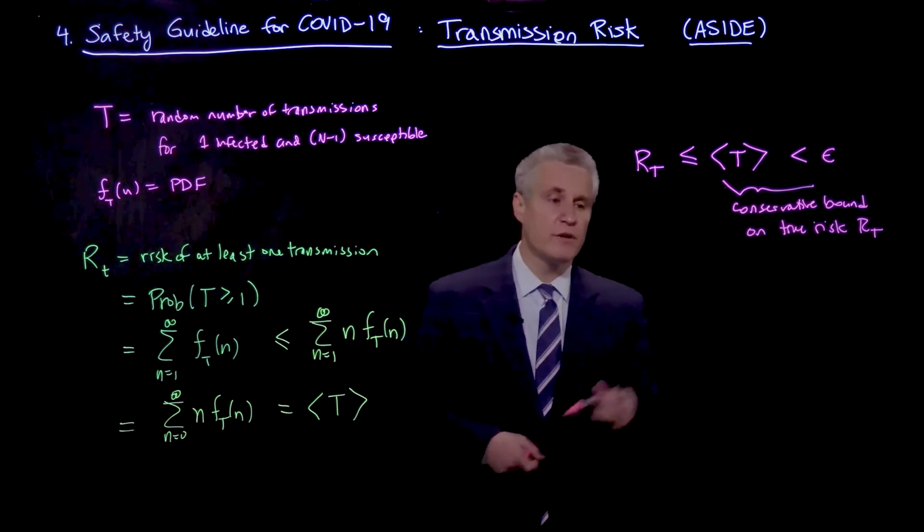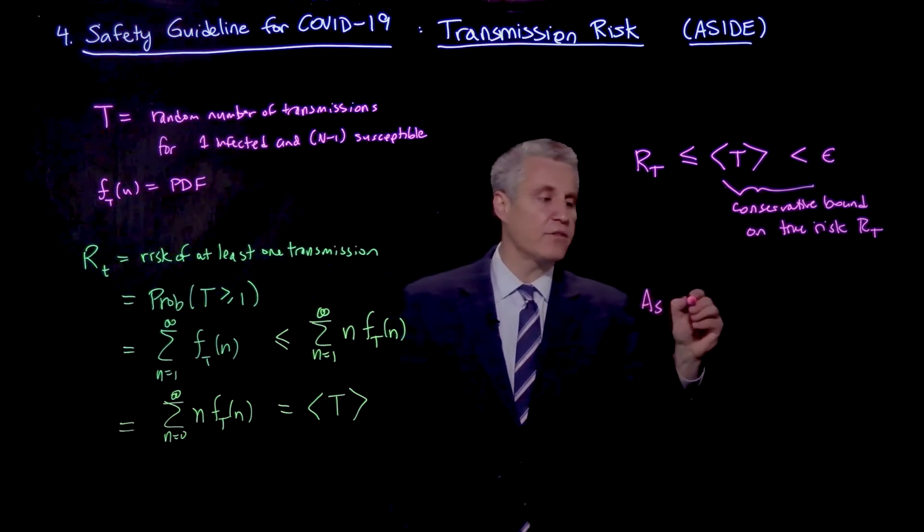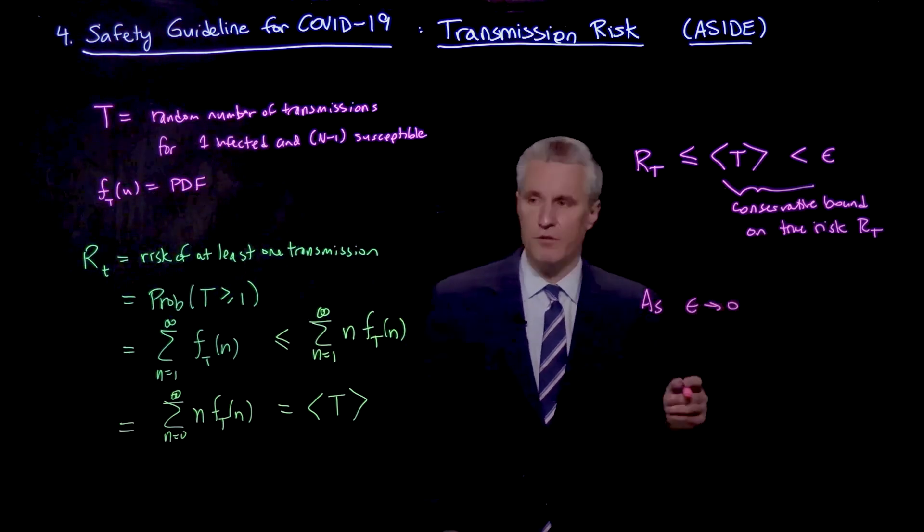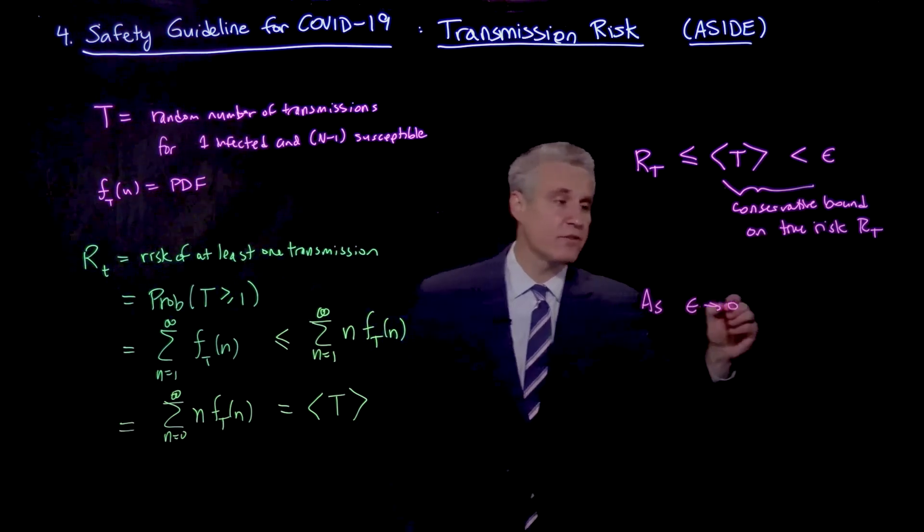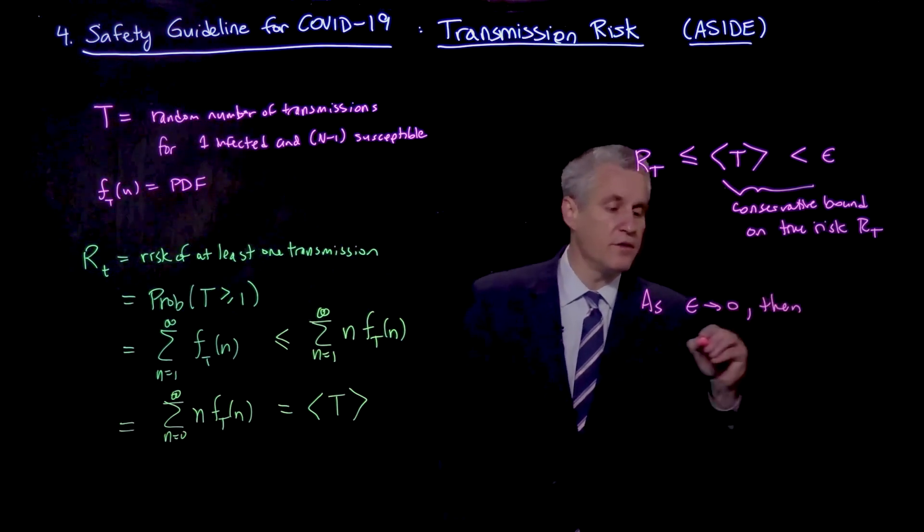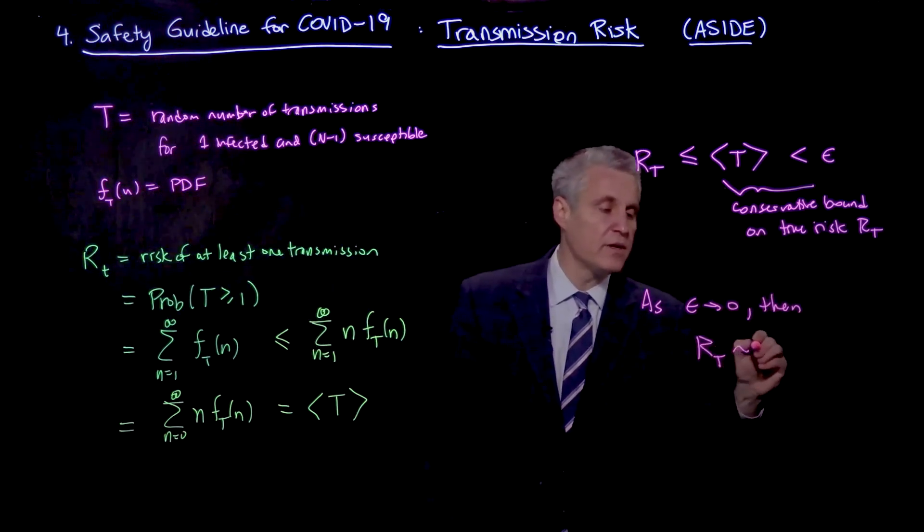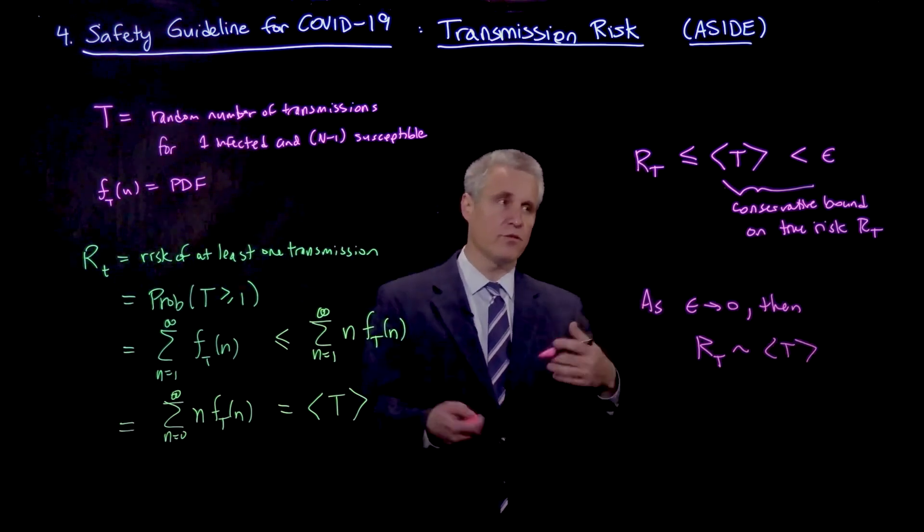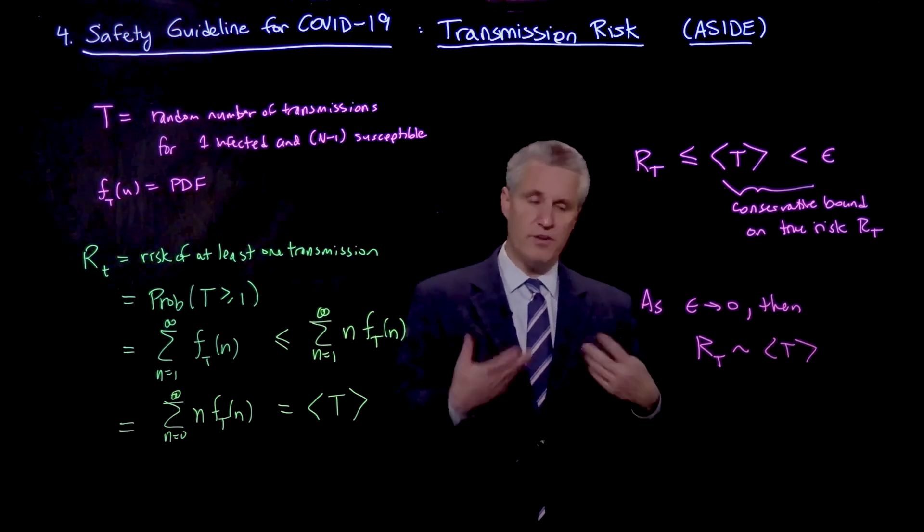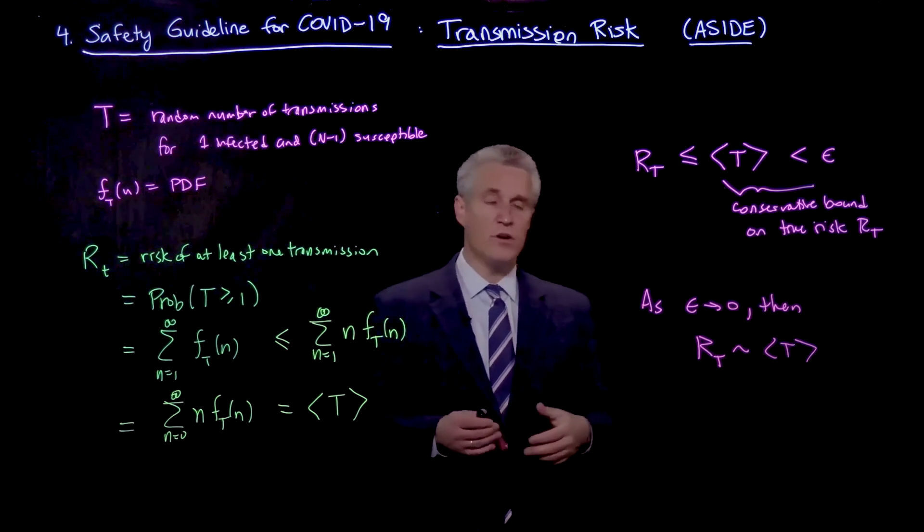It can also be shown that as epsilon goes to 0, so we're talking about very low probabilities of transmission, and oftentimes that is the case, then R_T is asymptotically the same as the expected number of transmissions. So this overall risk of a transmission and the expected number are the same.